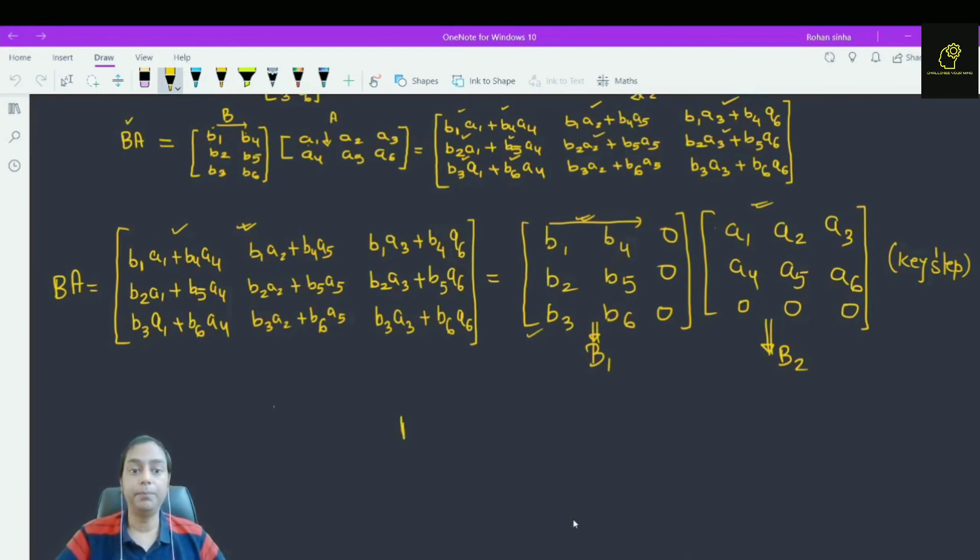So, what is B into A? What we find? We find this is B1 into B2.